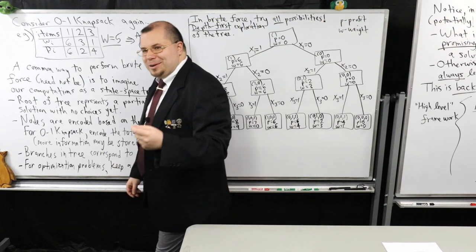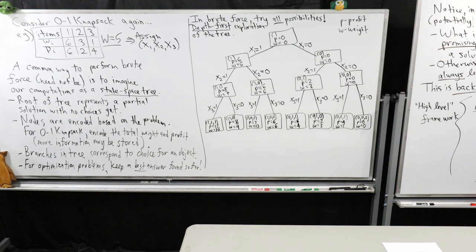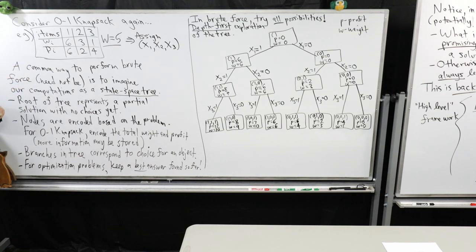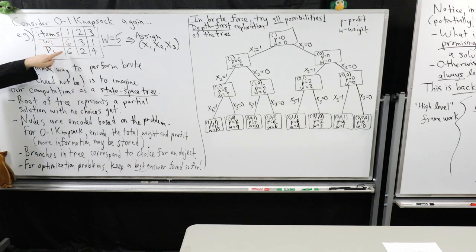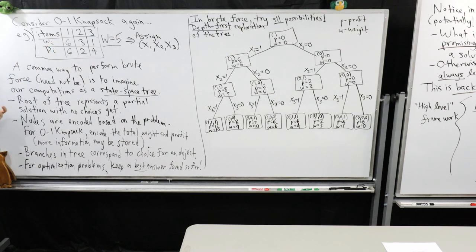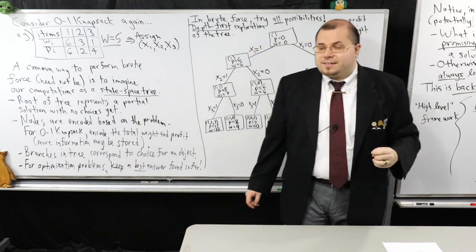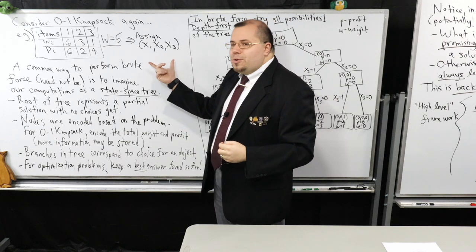I'm going to reconsider the zero-one knapsack problem as a good example. I have three items where the weights are 6, 3, and 1, and the profits are 6, 2, and 4, and the knapsack capacity is 5. You know right away that item one won't be included since its weight is too big. An optimal solution would include items two and three with total profit six.